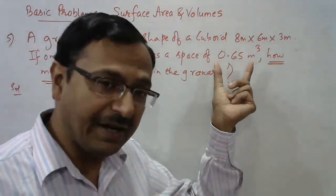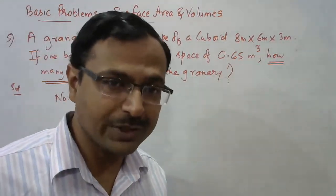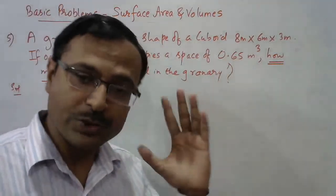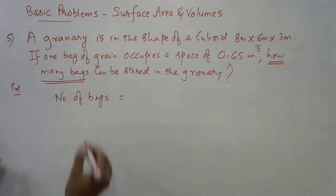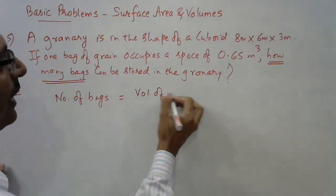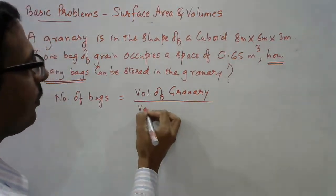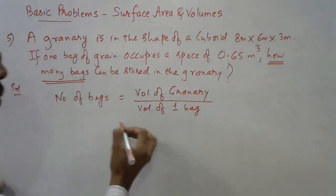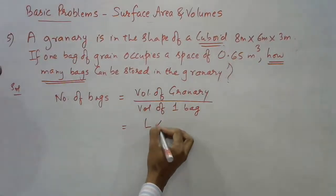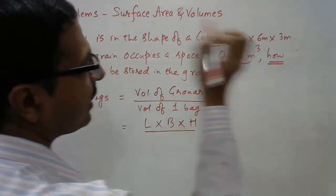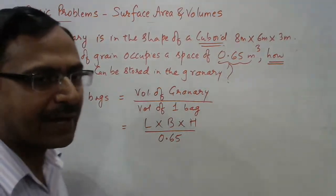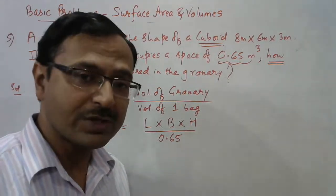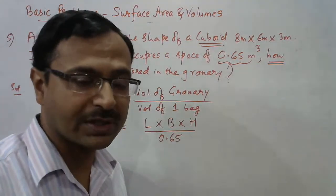To find number of bags, divide the volume of the grainery by the volume of one bag. Volume of grainery (cuboid) = L × B × H = 8 × 6 × 3 = 144 m³. Volume of one bag = 0.65 m³. Number of bags = 144 / 0.65. Writing 0.65 as 65/100, this becomes 144 × 100/65 = 14400/65. This simplifies — 5 cancels into both: 2880/13.